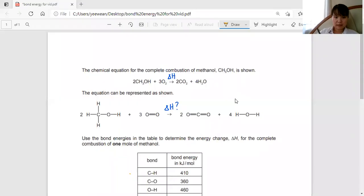I'm going to count how many C-H bonds there are. C-H, we have one, two, three times two, so six of them.